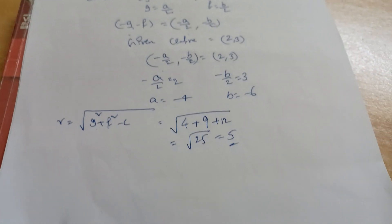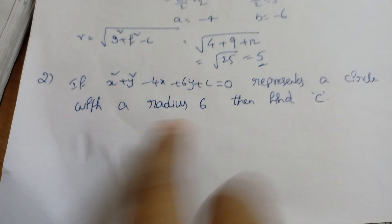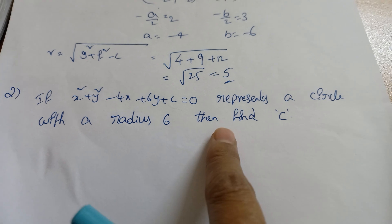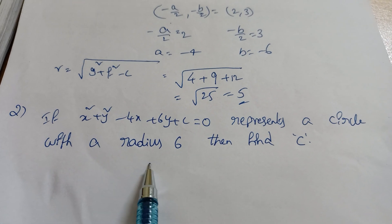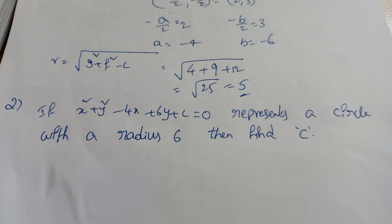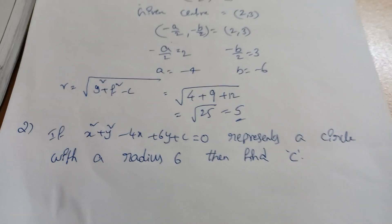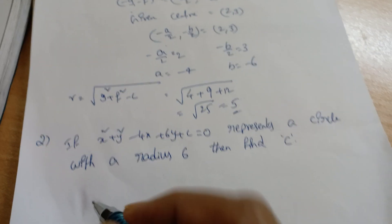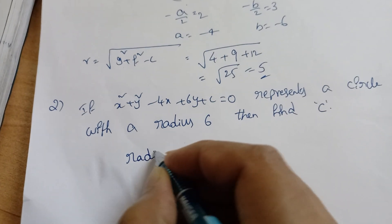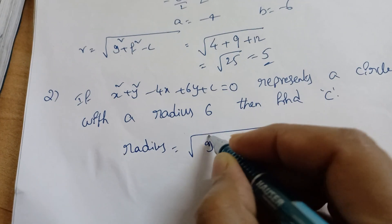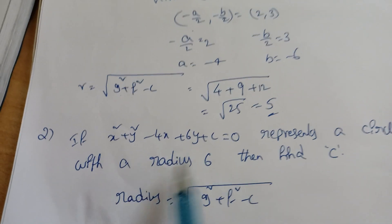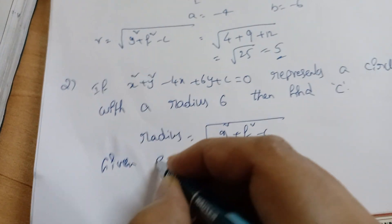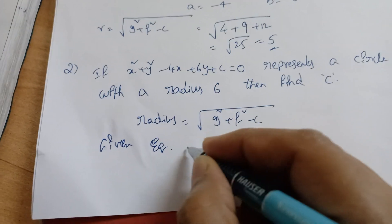Next question: if x² + y² − 4x + 6y + c = 0 represents a circle with radius 6, find c. Here the radius is given, so just equate the radius formula to 6 and you will get the value of c. The radius formula is √(g² + f² − c).